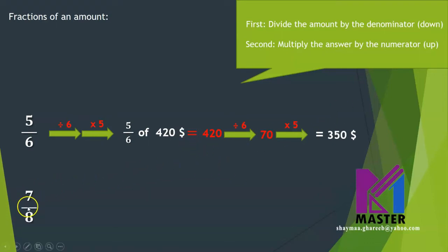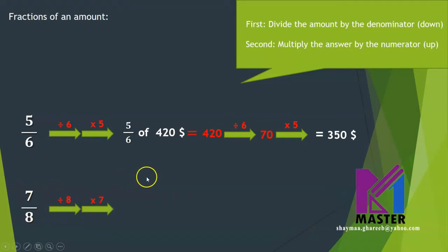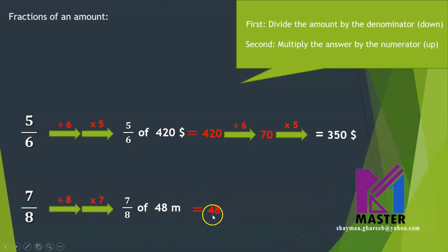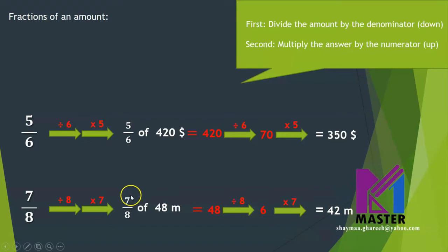One more example: seven eighths. Exactly the same. First step, divide by the denominator. Then multiply by the numerator. So seven eighths of 48 meters: divide 48 by eight — 48 divided by eight equals six. Then multiply six by seven. Six times seven is 42 meters. So seven eighths of 48 meters equals 42 meters.